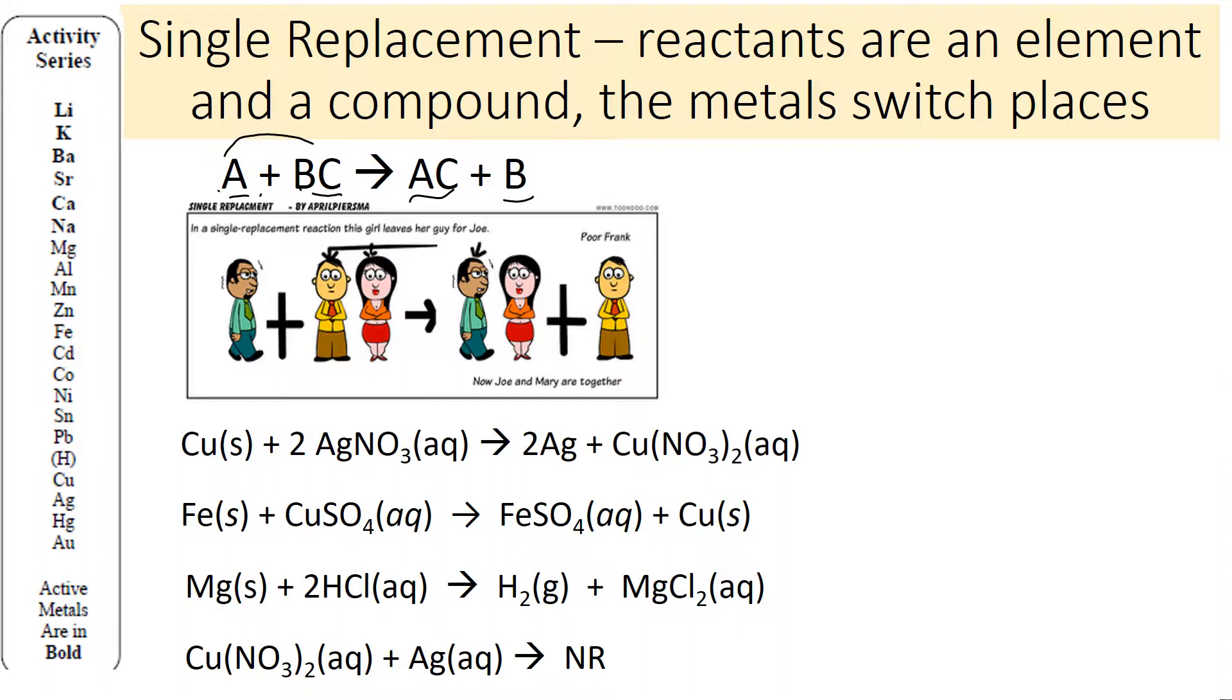We determine these based on the activity series. On your periodic table, you have this activity series, and it lists the metals from the most active to the least active. The most active metal is the one that would most want to be in a compound. Lithium really wants to be in a compound, gold not so much. In any single replacement, you can decide whether that's going to happen based on the activity series.